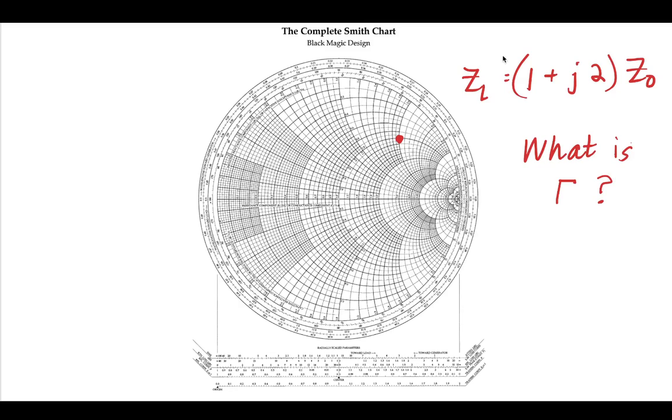So first, let's start with a load impedance. Our load impedance is some rectangular form multiplied by the characteristic impedance. Now we have done this in order to normalize it to our characteristic impedance.